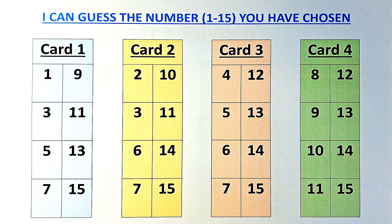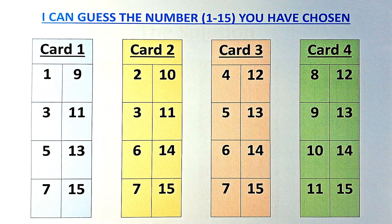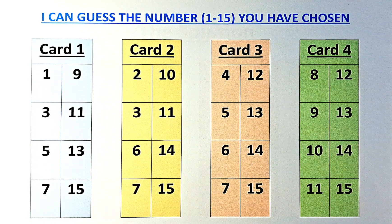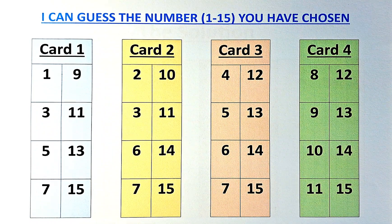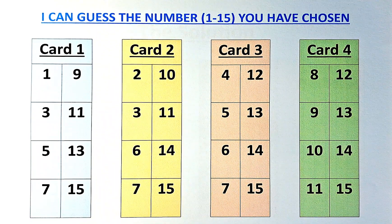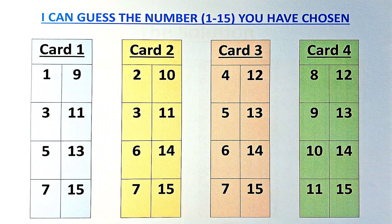So if you can find out how this trick works, please let me know. The first thing in this trick is you need to choose a number between 1 to 15. I am able to guess which number you have chosen. There are four cards in front of us — the blue, yellow, brown, and green card, labeled as 1, 2, 3, 4.